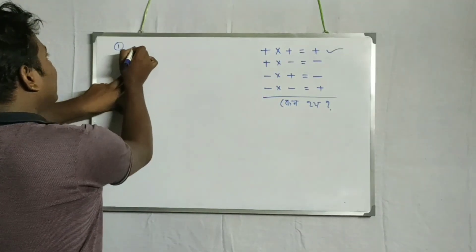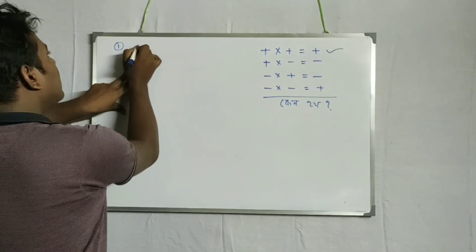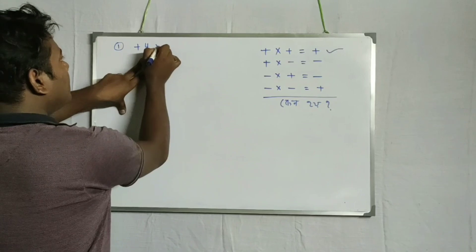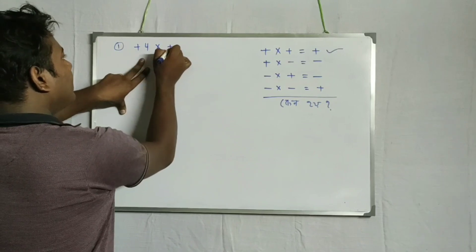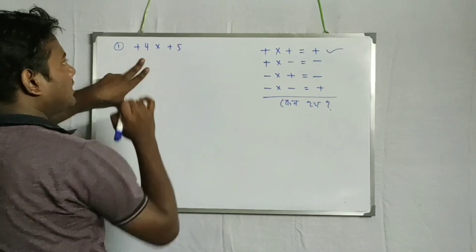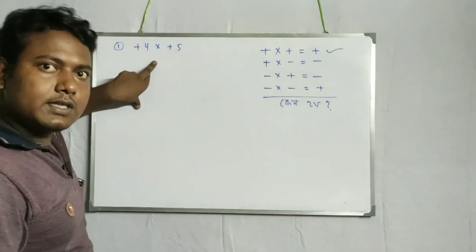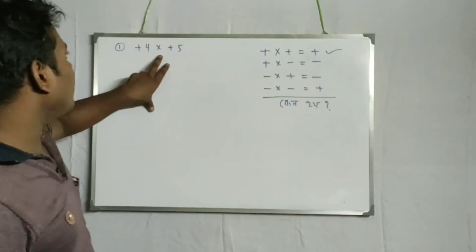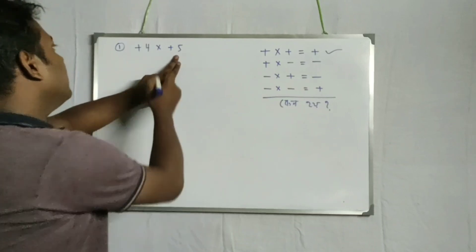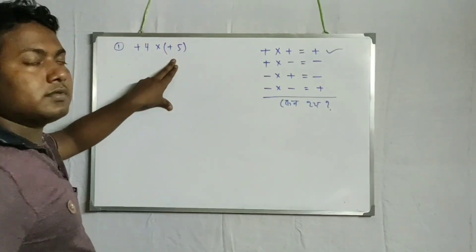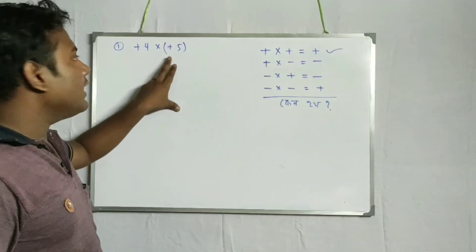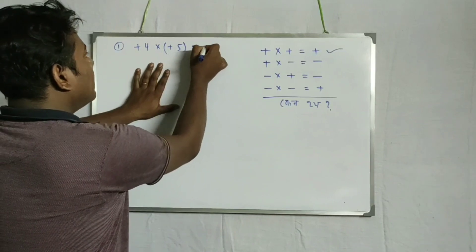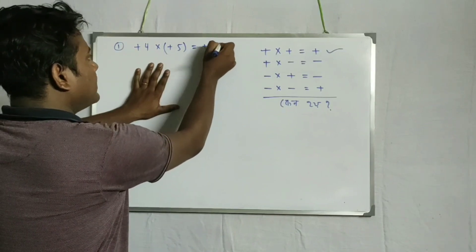Plus plus. Take two numbers: one is 4, another is 5. So take plus 4 into plus 5. If you multiply these together, how much is it? Plus 20.